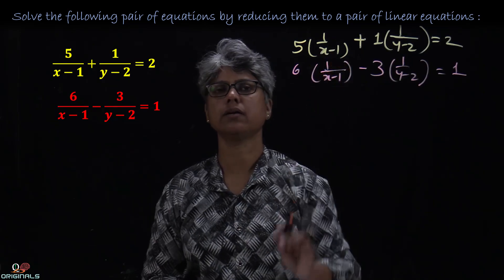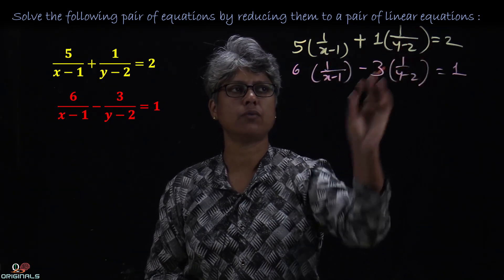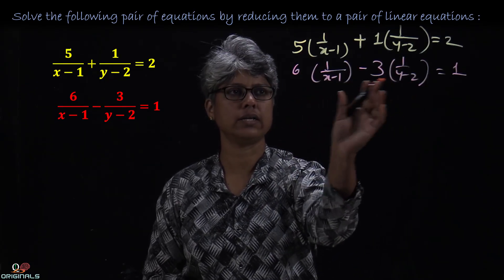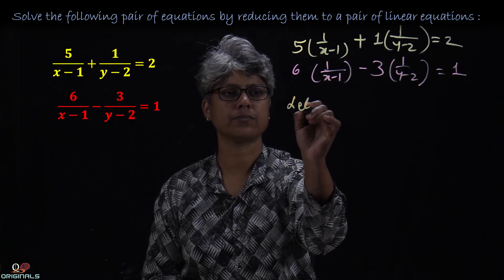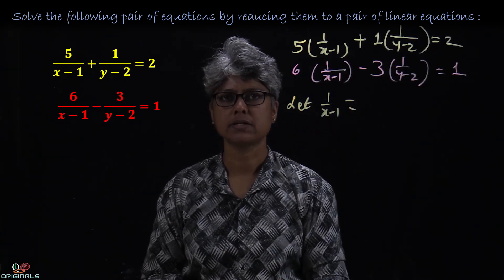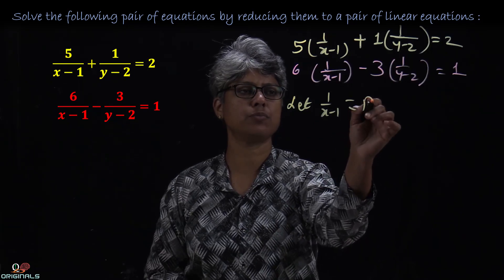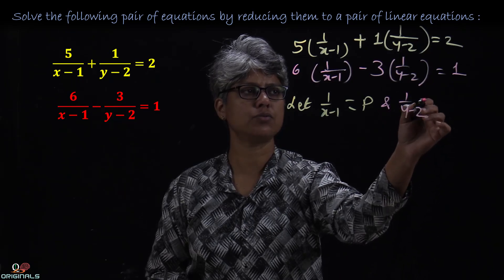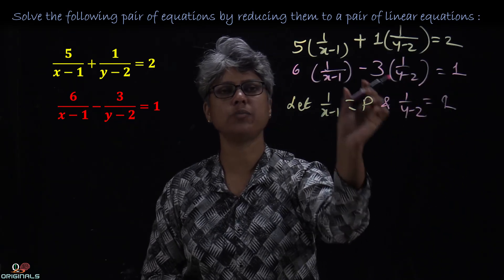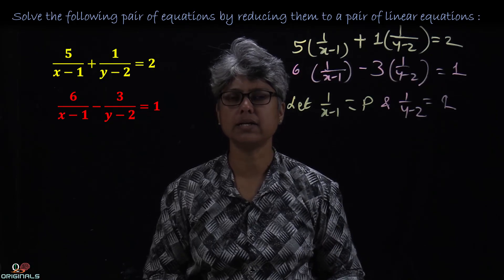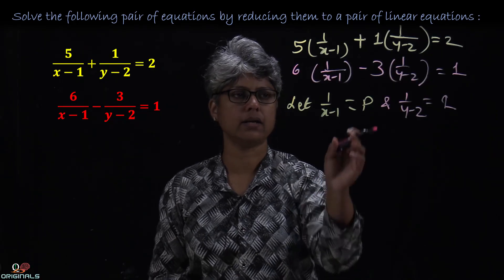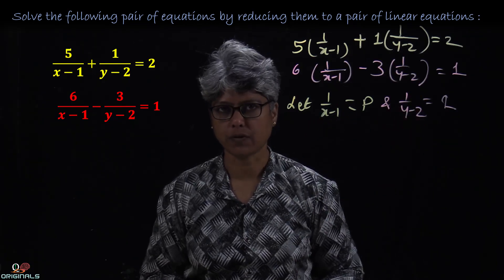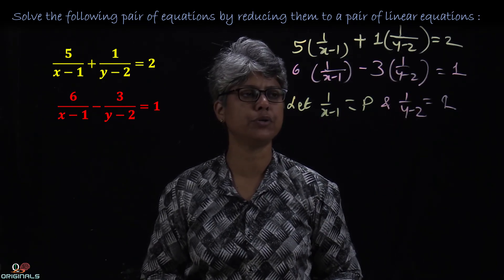Now, 1 upon (x minus 1) and 1 upon (y minus 2) are our variables. So let 1 upon (x minus 1) be equal to P, and 1 upon (y minus 2) be equal to Q. Because we have both of them, we will represent them as P and Q to simplify.